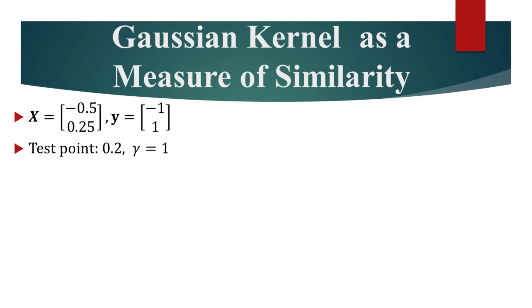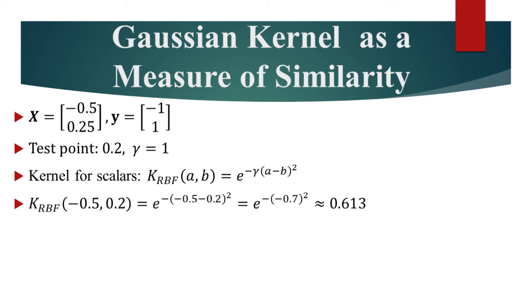For the kernel, we will use gamma equal to 1. And because we have data with just one feature, we can simply square the difference. Let's first evaluate the kernel for this test point and the first training example. We will get a response approximate to 0.6.